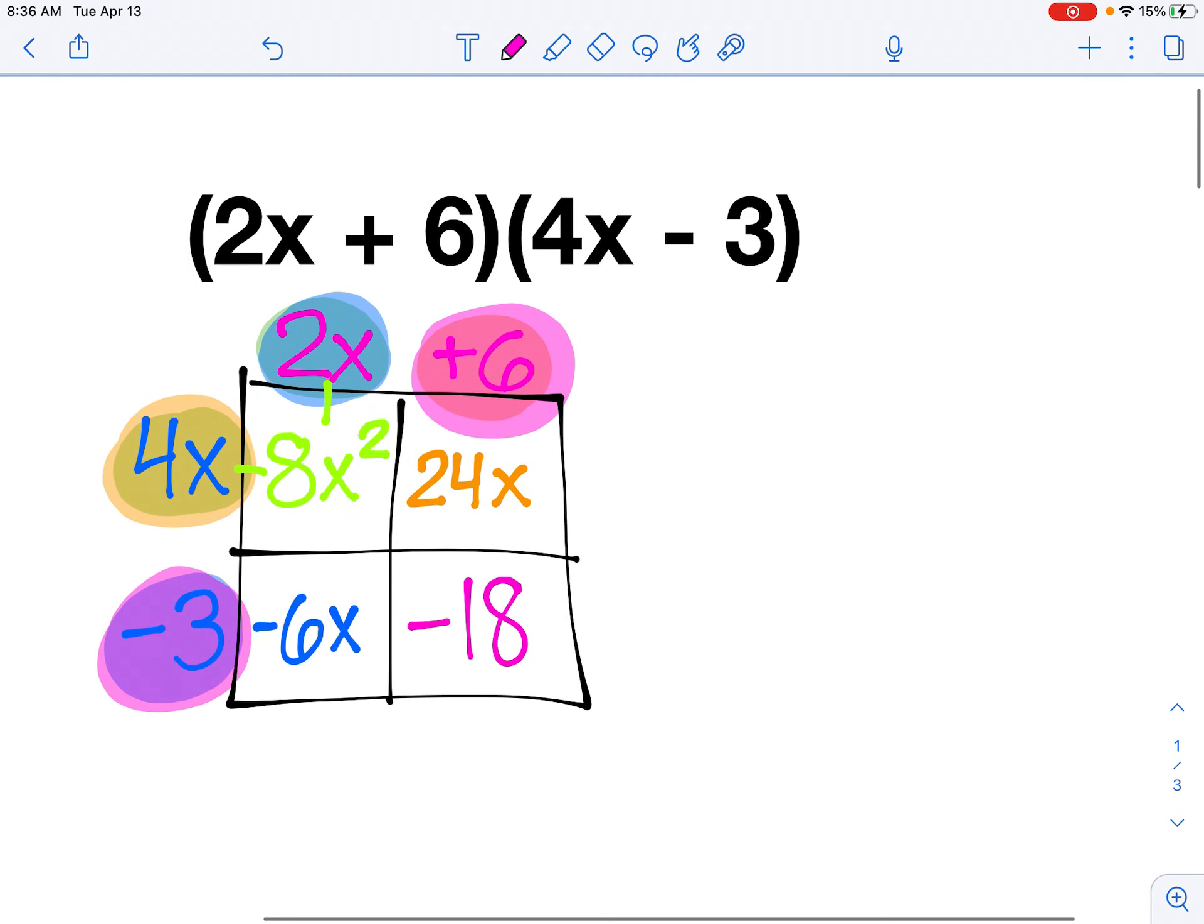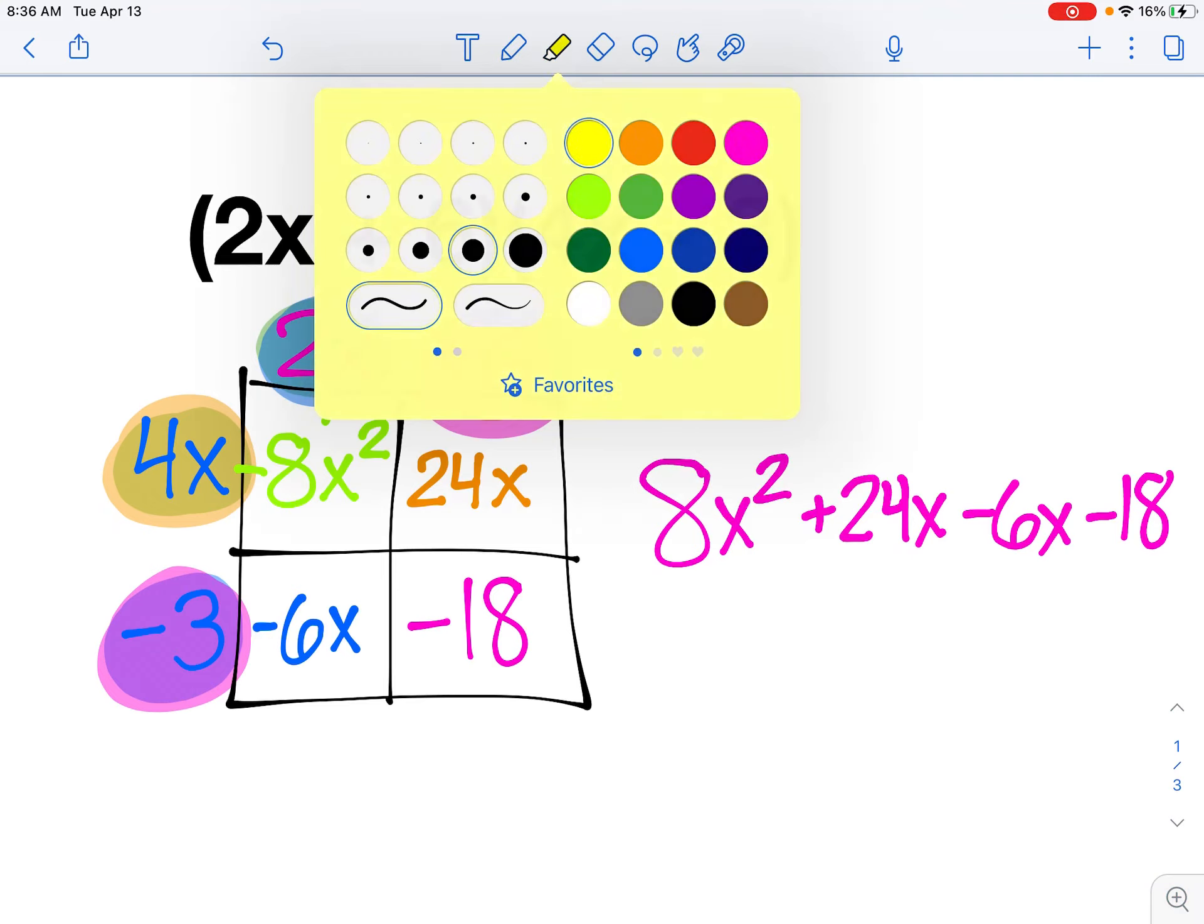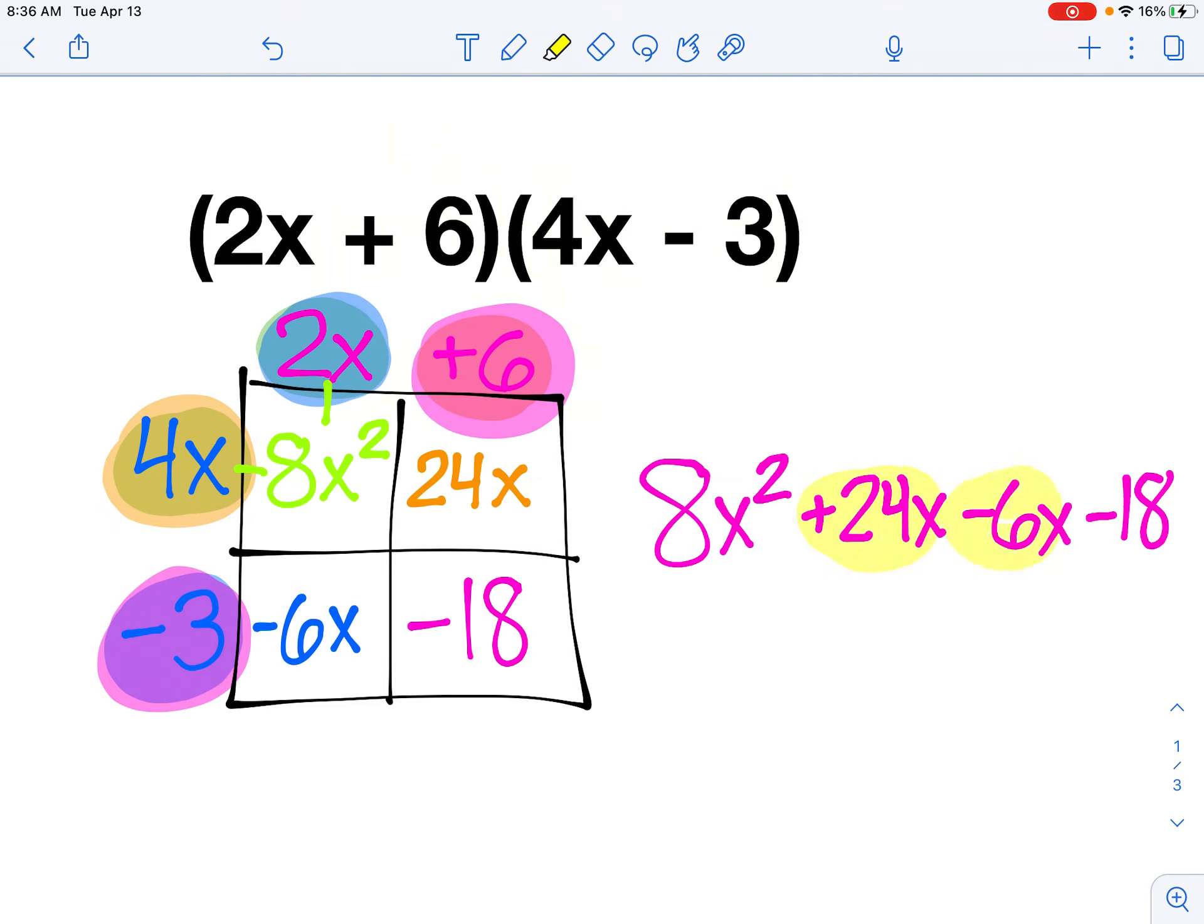So I've multiplied both pieces of my first binomial by both pieces of my second binomial. And so far, I have a polynomial that says 8x squared plus 24x minus 6x minus 18. Now this is a nice answer, but it's not fully simplified, because I see that I have a positive 24x and a minus 6x that can be combined. So my final answer is 8x squared plus 18x, 24 minus 6, minus 18. This polynomial is my final solution, because it's been fully multiplied and fully simplified. So 8x squared plus 18x minus 18 is my final answer.